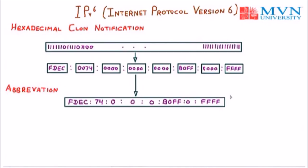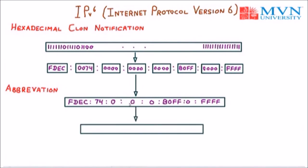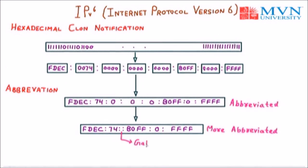There is one more abbreviation to compact the IPv6 address. If we have continuous zeros, we can represent them with a double colon. So FDEC remains the same, then 74. Now we have 3 continuous zero groups, and we represent them as a double colon. Then after the double colon we have B0FF, then 0, then 4F. So the first form is abbreviated, and the second form is more abbreviated, with the gap represented by the double colon.